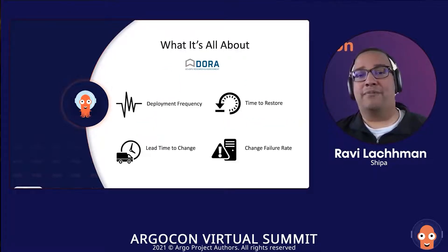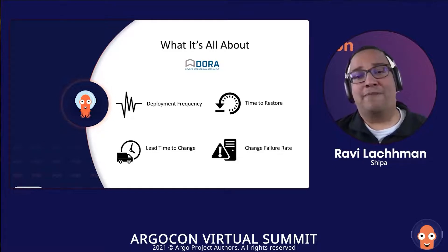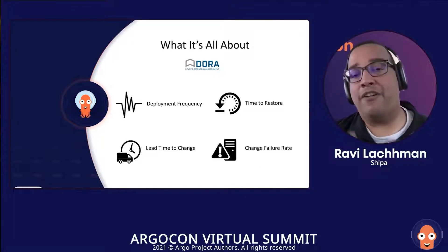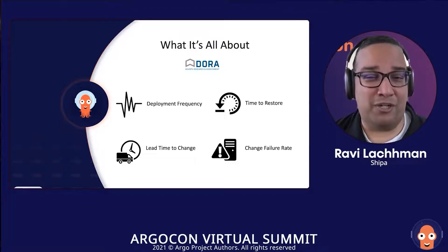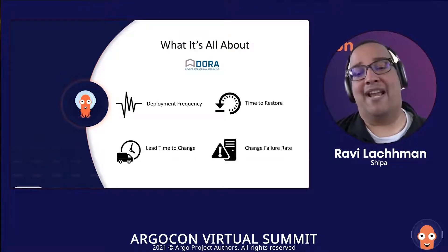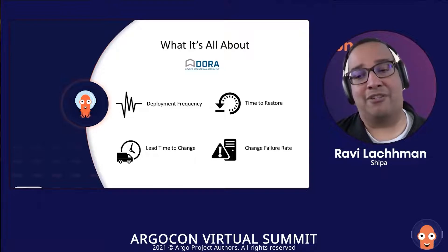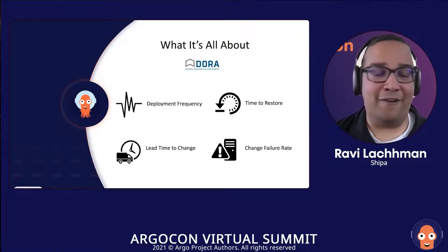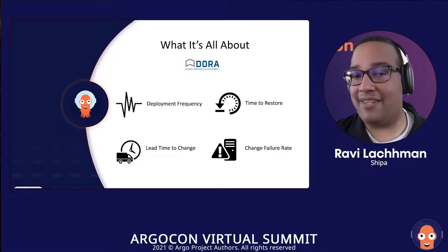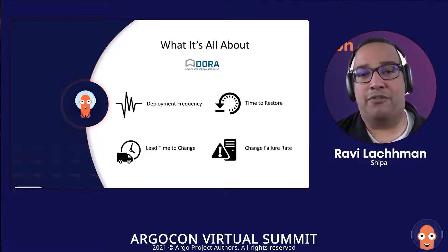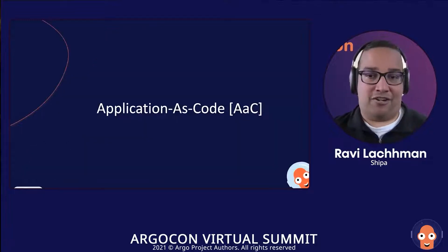This is what it's all about — the DORA metrics. If you haven't heard of them: deployment frequency, time to restore, lead time to change, and change failure rate. Having good developer experience will help move the needle on these. You're able to deploy more frequently, reduce lead time — which is the big one. If people can iterate more and interact with your platform more, lead time decreases, and your change failure rate should be reduced. That brings us to application as code.